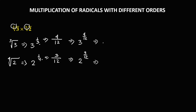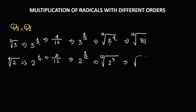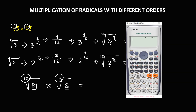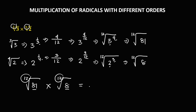In radical form, we have the 12th root of 3 to the power 4, and the 12th root of 2 to the power 3. Simplifying: 3 to the power 4 is 81, and 2 to the power 3 is 8. To find the product, since they have the same root, we multiply the numbers inside the radical. So 81 times 8 equals 648, and the product is the 12th root of 648.